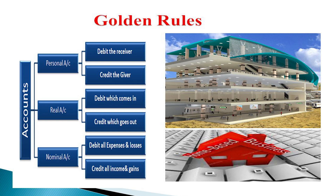The nominal account rule is: Debit all expenses and losses — whatever loss or expenses the business incurs; Credit all incomes and gains — whatever gain or income the business receives. So the three Golden Rules are: Personal account — Debit the Receiver, Credit the Giver; Real account — Debit what comes in, Credit what goes out; Nominal account — Debit all expenses and losses, Credit all incomes and gains.